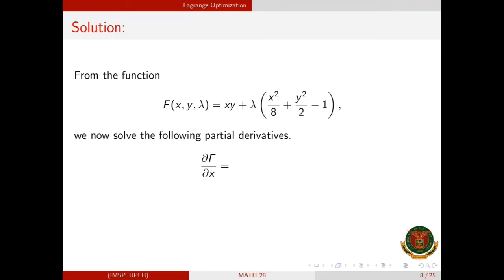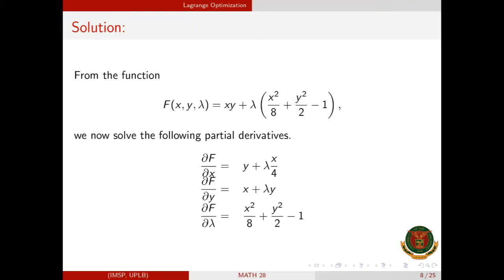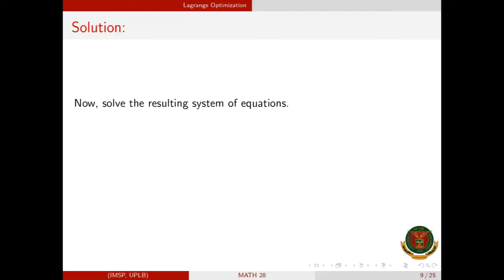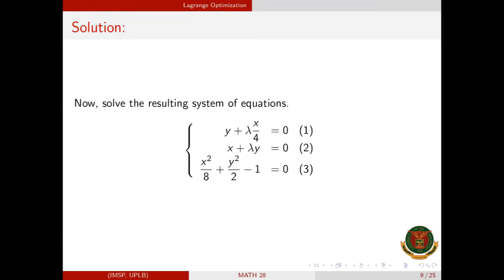From the function capital F, we now solve the following partial derivatives. The partial derivative of F with respect to x is y + λ·(x/4). The partial derivative with respect to y is x + λy. The partial derivative with respect to λ is x²/8 + y²/2 − 1. We then set these equal to zero to form the resulting system of equations.